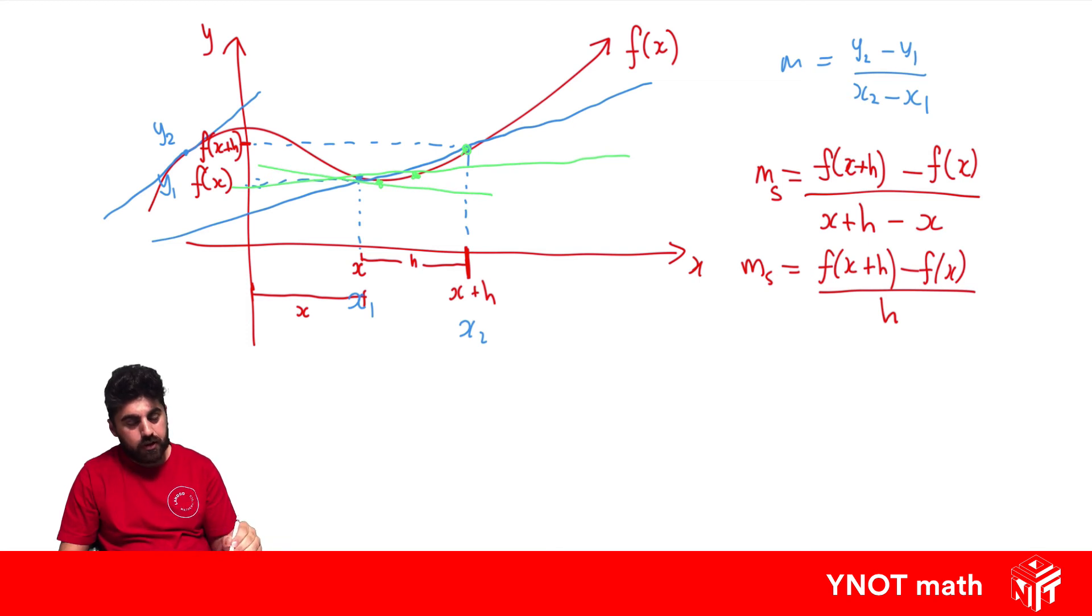But we can't have h equals zero, because we're dividing by h. So we'd be dividing by zero, which we can't do. But if h was zero, and the two points would be on top of each other, we would have a tangent.